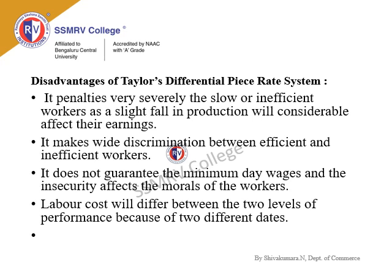Disadvantages of Taylor's Differential Piece Rate System: First, it penalizes slow or inefficient workers very severely, as even a slight fall in production considerably affects their earnings. Second, it creates wide discrimination between efficient and inefficient workers. Third, it does not guarantee minimum daily wages, and this insecurity affects the morale of workers. Fourth, labor cost differs between the two levels of performance because of the two different rates.